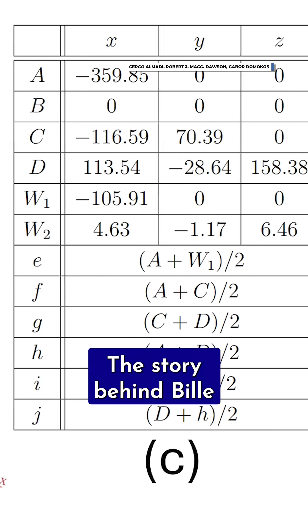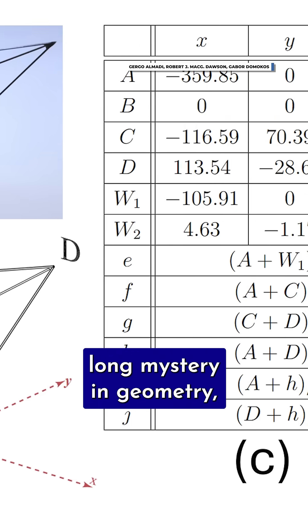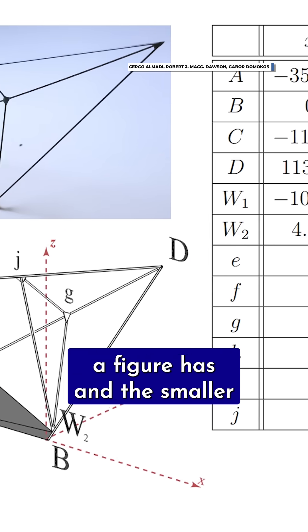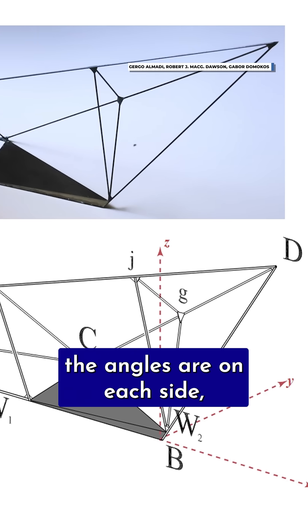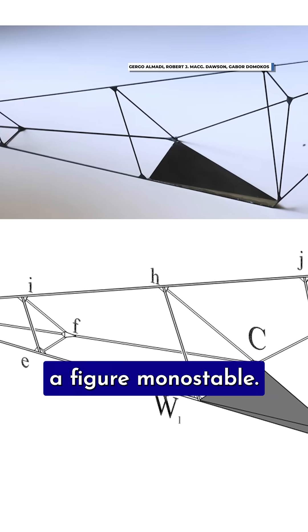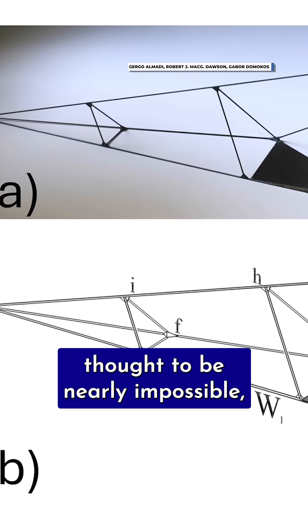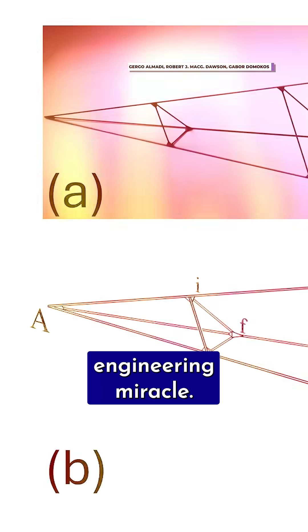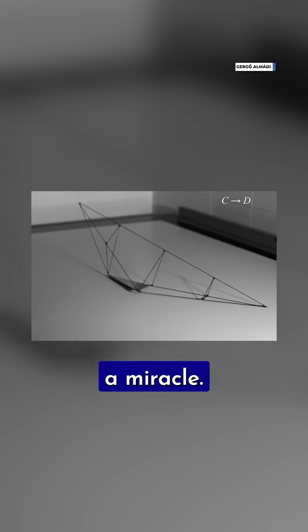The story behind belay actually involves a decades-long mystery in geometry where the fewer sides a figure has and the smaller the angles are on each side, the harder it is to make a figure monostable. This was a task thought to be nearly impossible, barring some kind of engineering miracle. And belay was just that, a miracle.